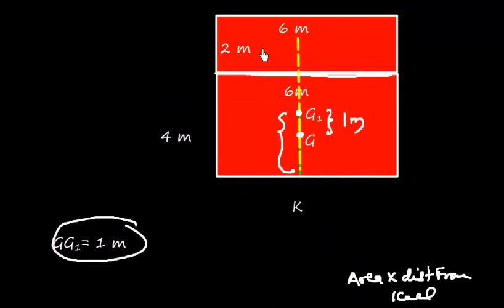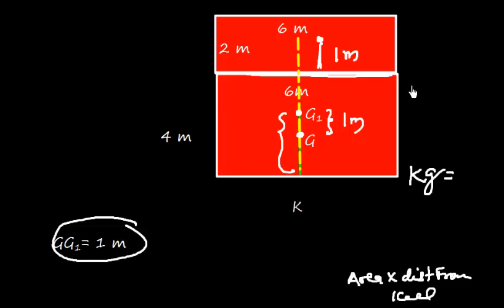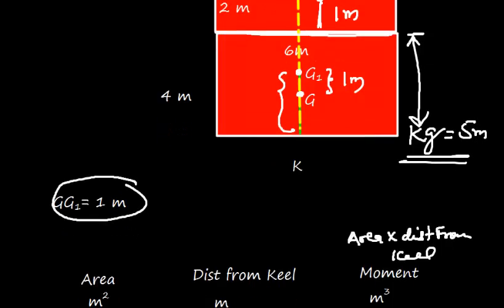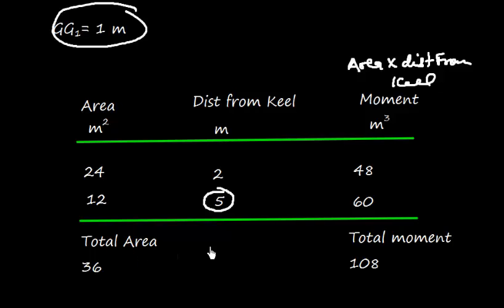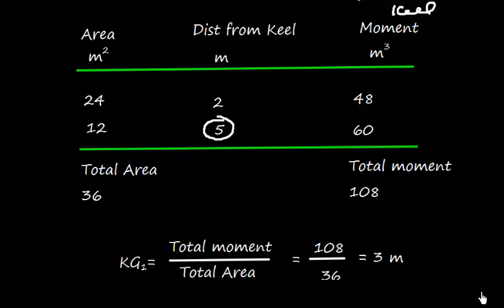Now we add the second area. After adding this area, the geometrical center is at half its height. Since the added piece is 2 meters tall, its center is 1 meter up from the base of that piece. So KG for the added piece is 4 plus 1 equals 5 meters. The second area is 12 square meters, distance from keel is 5 meters, giving a moment of 60 cubic meters. The total area is 36 square meters and total moment is 108 cubic meters.